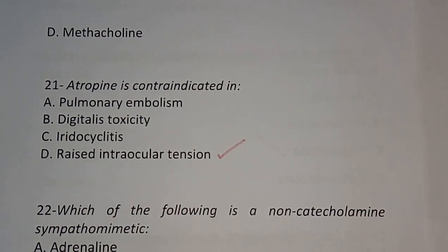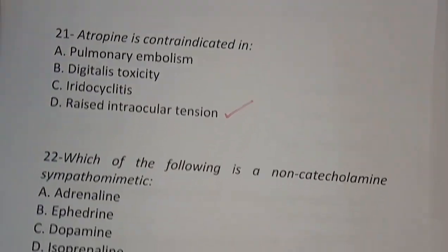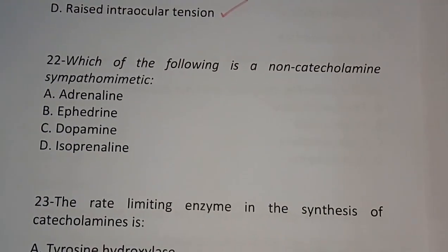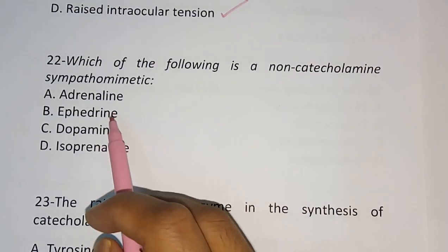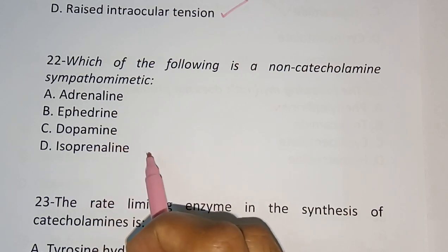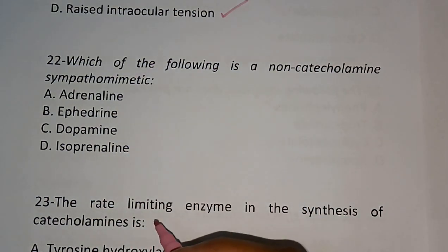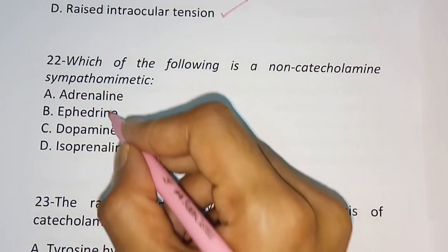Question number 22: Which of the following is a non-catecholamine sympathomimetic? Adrenaline, Ephedrine, Dopamine, Isoprenaline. The correct answer is: Ephedrine.